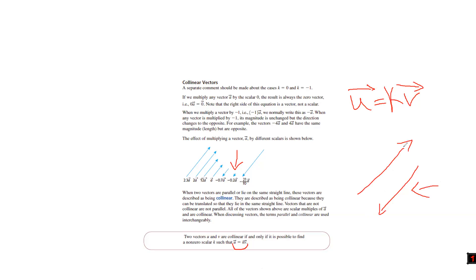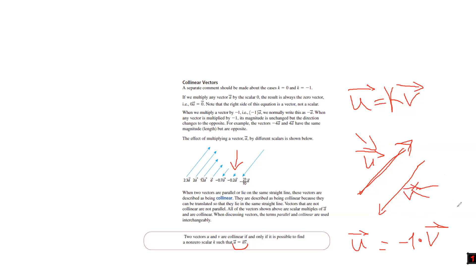If these vectors are parallel, what do I need to do with this vector to make it the same as the other? I'd multiply it by a negative number to reverse its direction. There would be such k as negative one, giving u equals negative one times v. Now I can say vectors u and v are collinear. You can use 'parallel' and 'collinear' interchangeably.